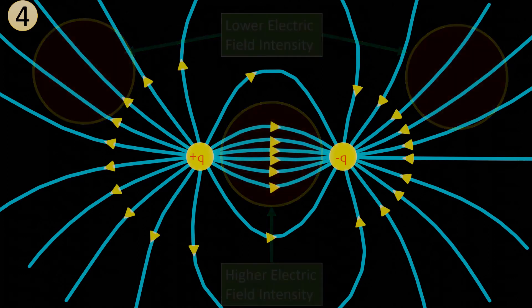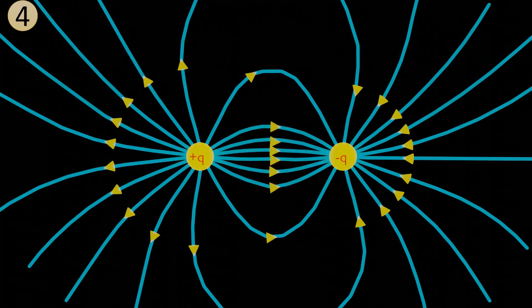Basically, electric field lines can be defined as a path along which a unit positive charge will be removed if placed in an electrostatic field.